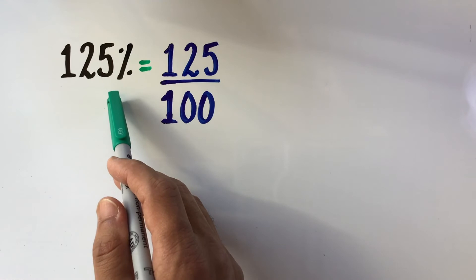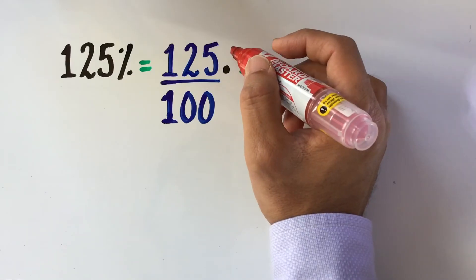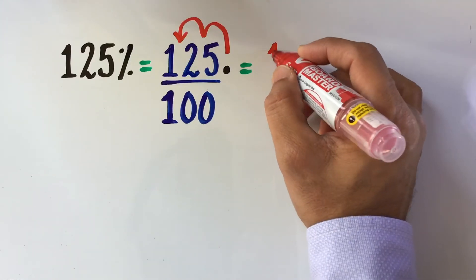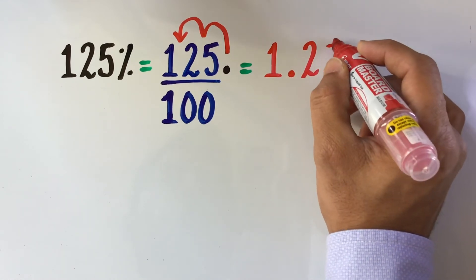Now rewriting it as a fraction, we get 125 over 100. Since we are dividing it by 100, we move the decimal point two places to the left. By doing that, we get the decimal form of 125% which is same as 1.25.